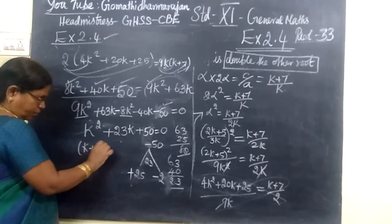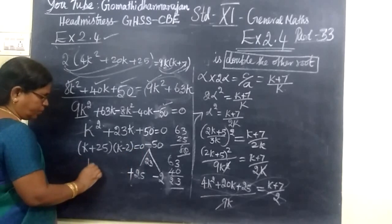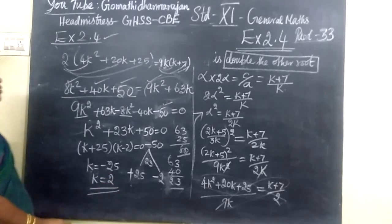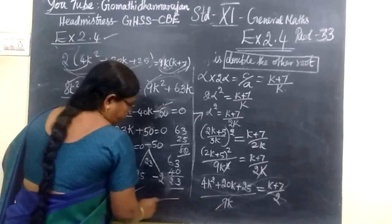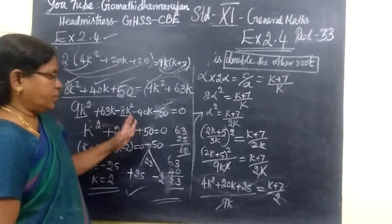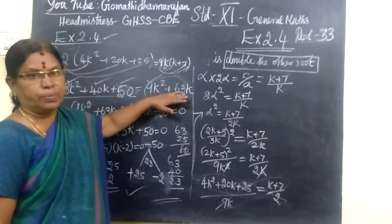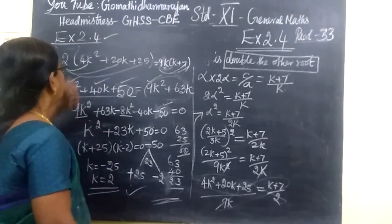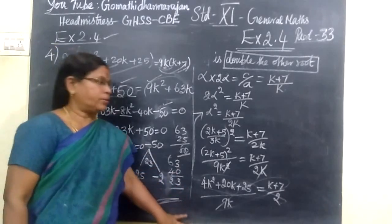So here (k plus 25) times (k minus 2) equals 0. So we get k equals minus 25, then k equals 2. So let us check the answer: k equals minus 25, then k equals 2. Thank you. In the next class, we see the trick for the next problem. Thank you.